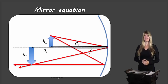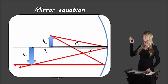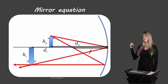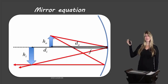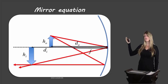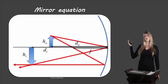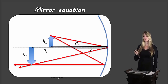Hello students, Ms. Swanson here, and today we're going to learn about the mirror equation. This picture here shows how light reflects off of a concave mirror and it shows the various parts of what we're looking at. So we have an object, we have an image, and some of the characteristics that we'll be learning about today.